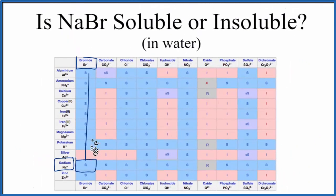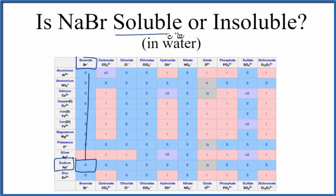One last way: we could take some sodium bromide — it's an ionic compound, it's a crystal — drop it in water and observe what happens. So in answer to our question, sodium bromide is soluble in water. This is Dr. B, and thanks for watching.